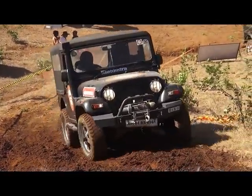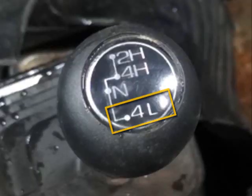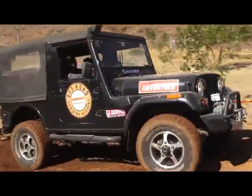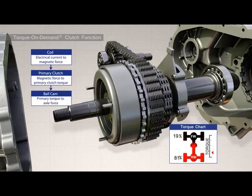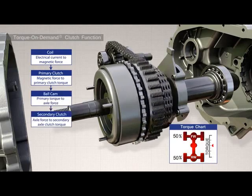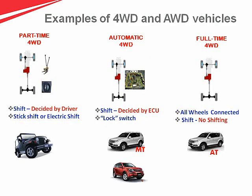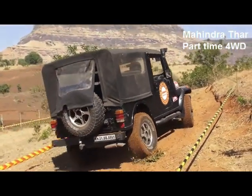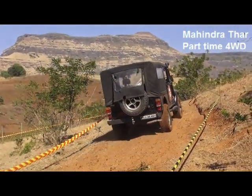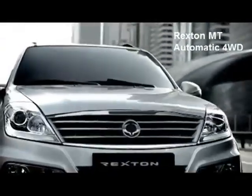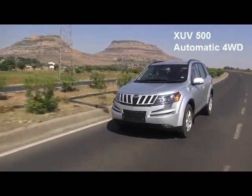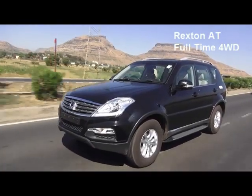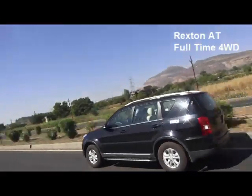In short, the four wheel drives or all wheel drives have the low gear option for maximum torque requirements while off-roading, and also could have systems which manage the torque going to the front and rear wheels. For example, the Mahindra Thar comes under the part-time four wheel drive category, the Rexton MT and XV5W come under the automatic four wheel drive category, and the Rexton 80 gets listed under the full-time four wheel drive category.